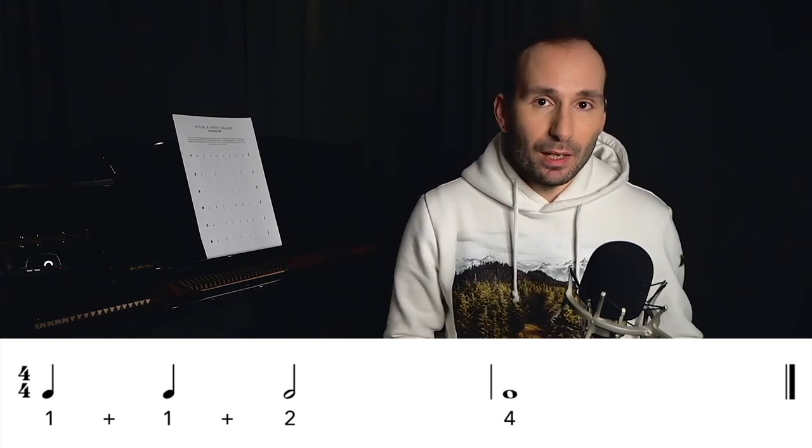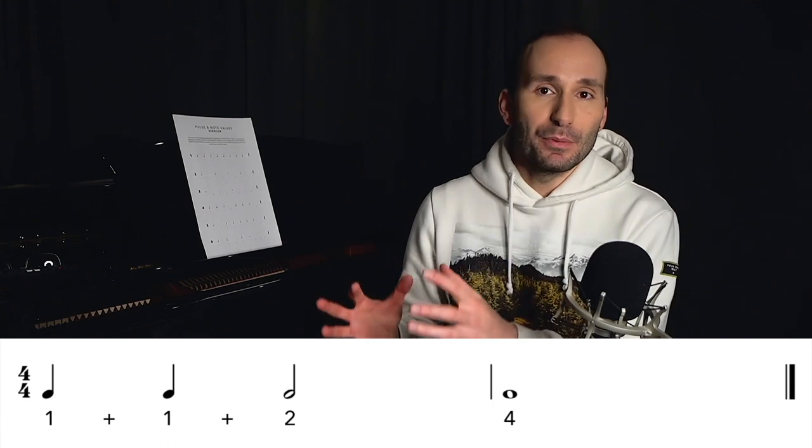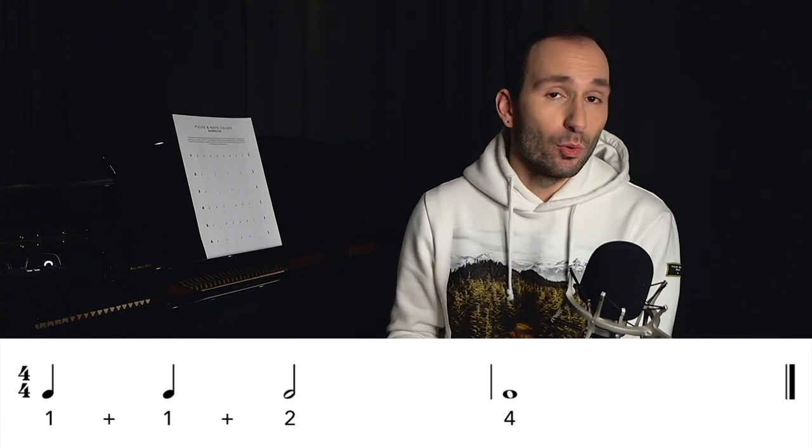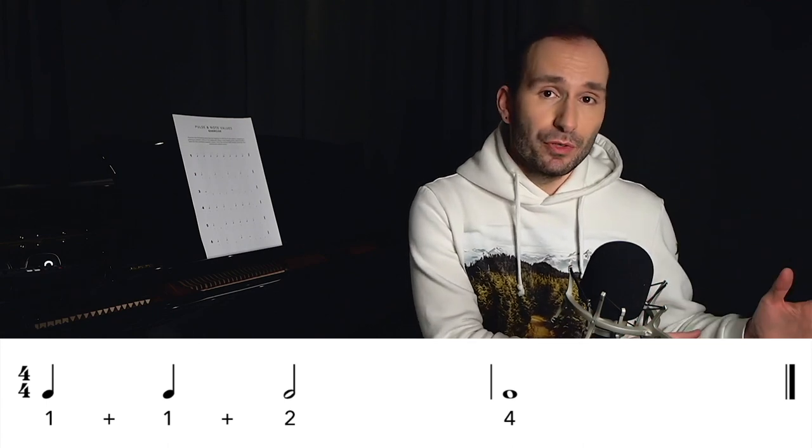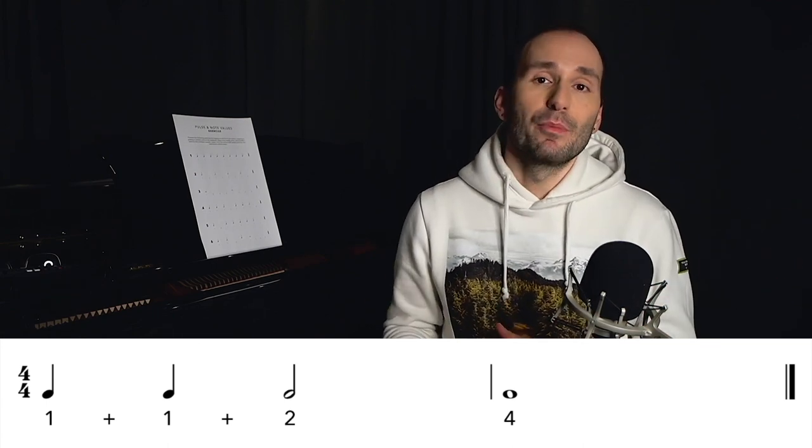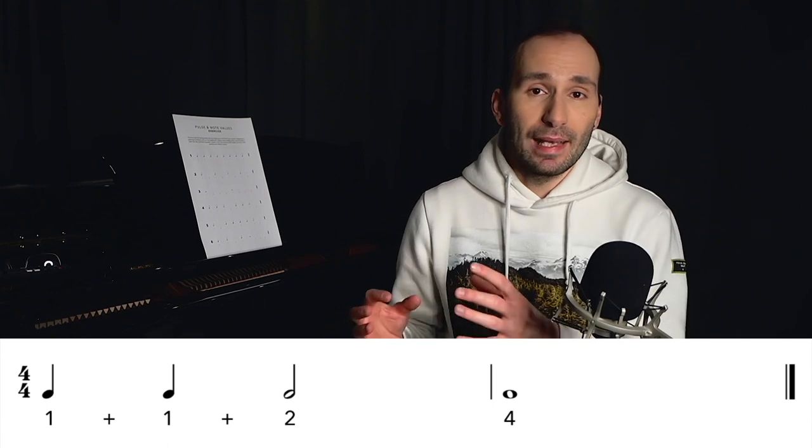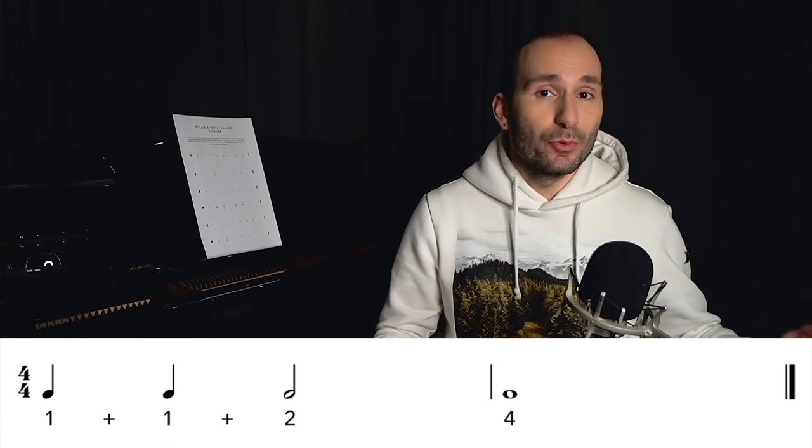So as you can see the numbers, it doesn't matter what kind of note values we have in each measure, or bar, as long as they add up to four crotchet beats, or four quarter note beats. So you can have four quarter notes, you can have two quarter notes, and one half note. Any combination that's going to make up four counts is going to fit into one bar.